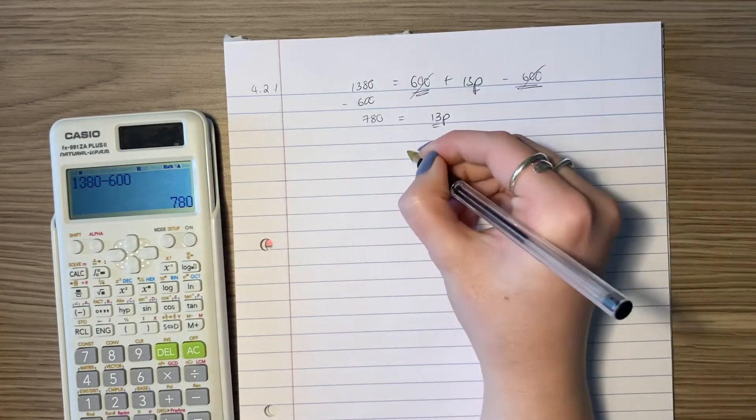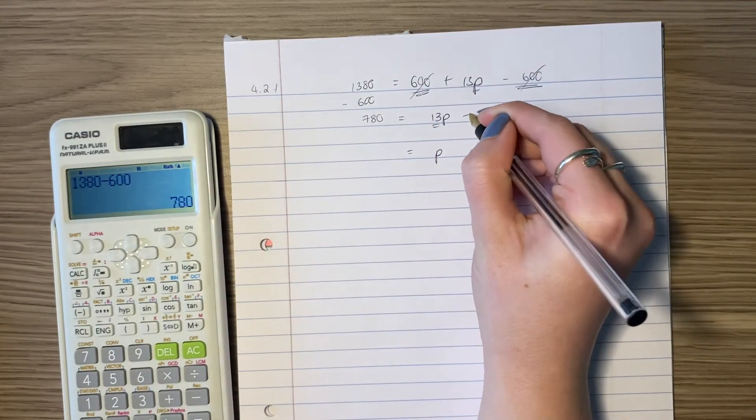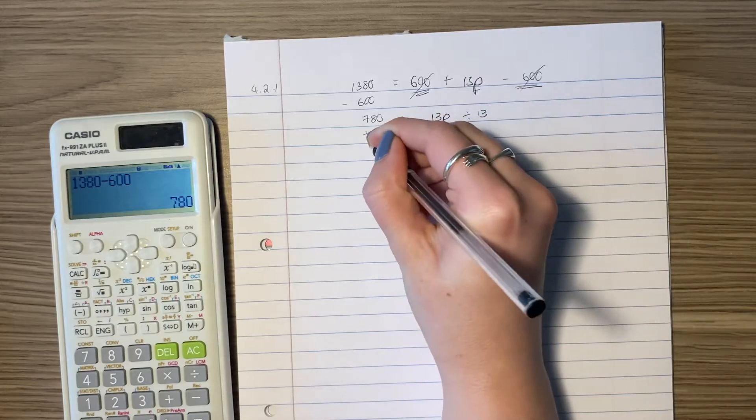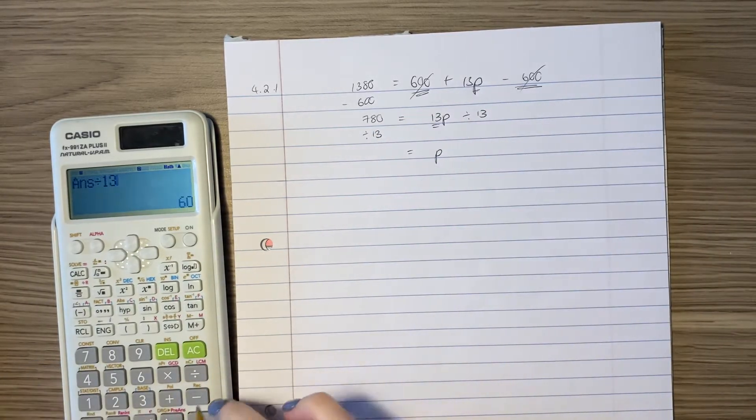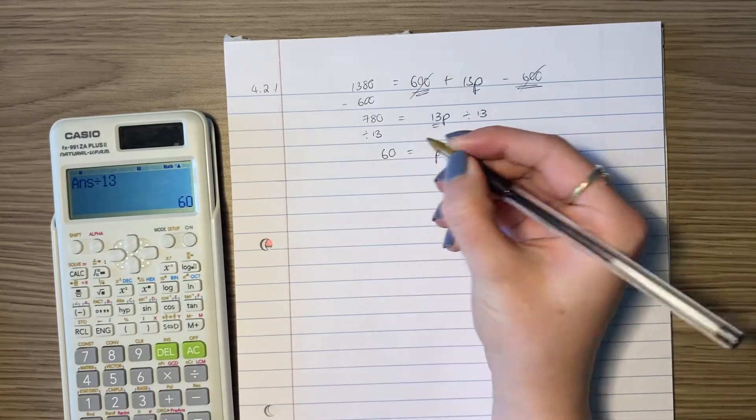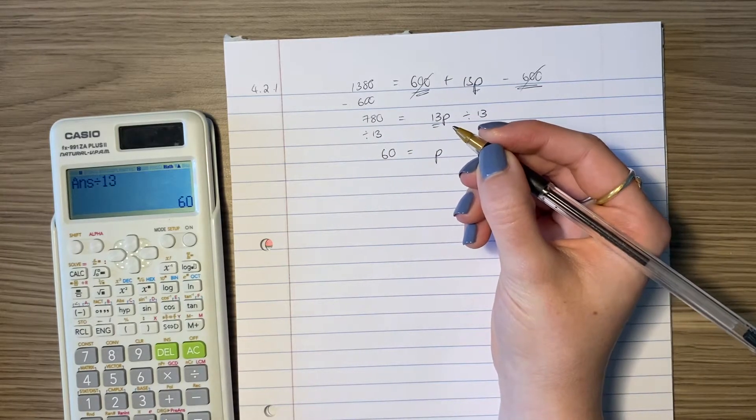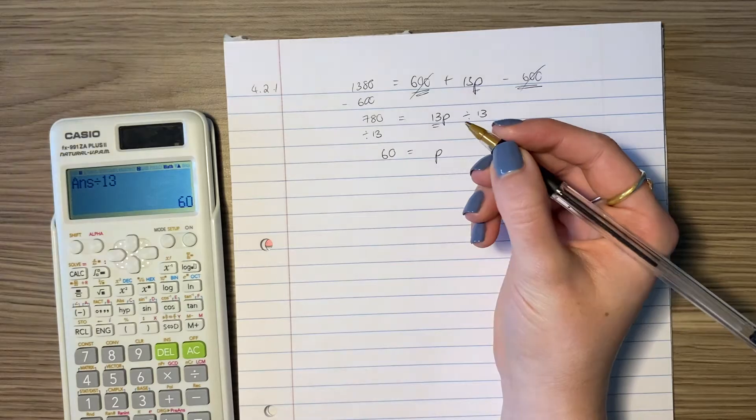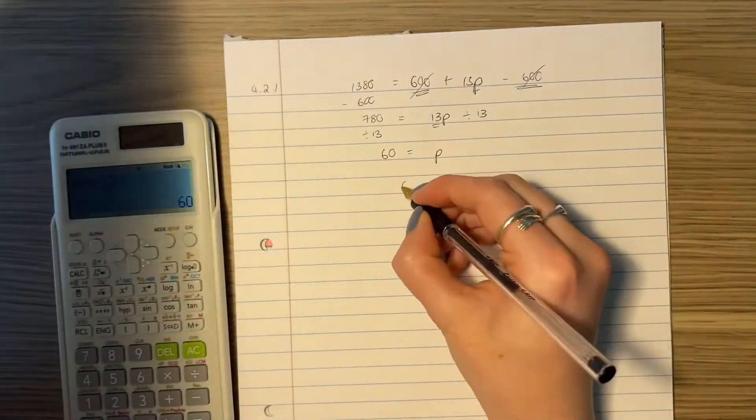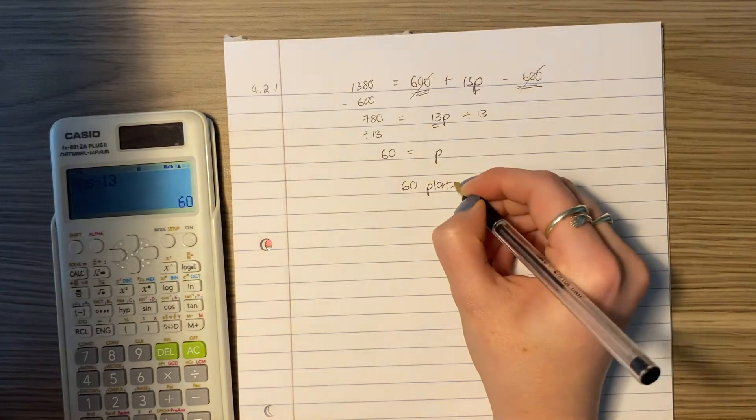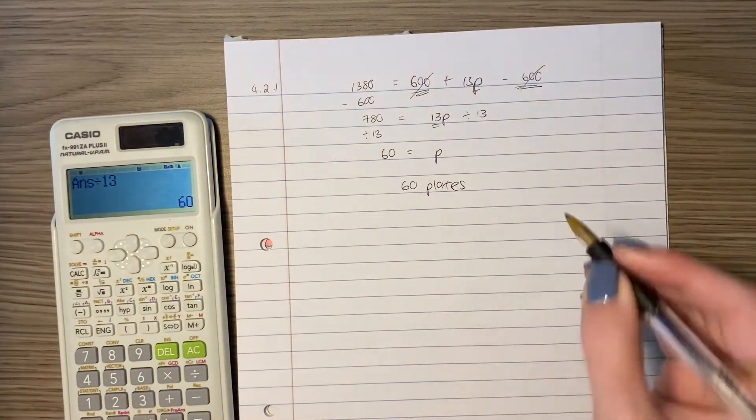Now we just want to get p by itself. Now 13p equals this, but I actually just want to know what 1p equals. So I'm going to divide both sides by 13. So now 1p is going to equal 60. So the answer there is 60 plates. You should probably write it out as 60 plates. Don't just say 60 because that doesn't really mean anything.